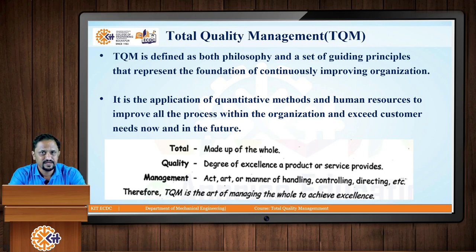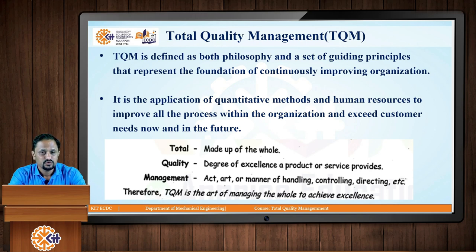In a nutshell, you can say Total Quality Management breaks down as: Total means made up of the whole organization as such; Quality is the degree of excellence a product or service provides; and Management is the act, art, or manner of handling, controlling and directing the entire organization. So TQM can be defined as the art of managing the whole organization to achieve excellence continuously.